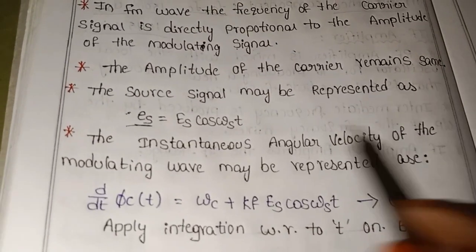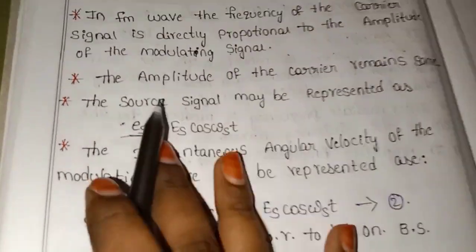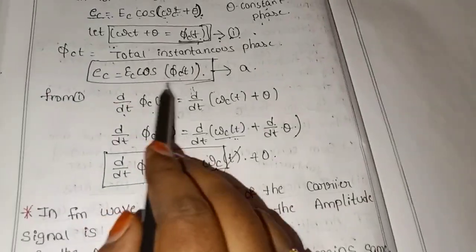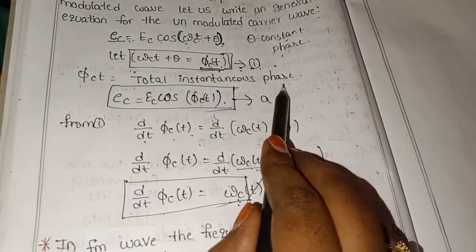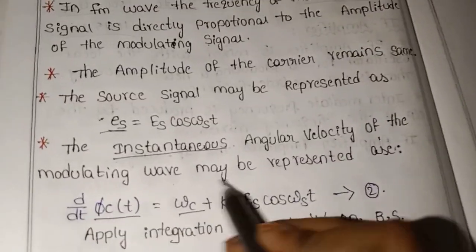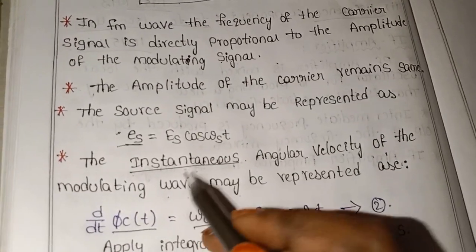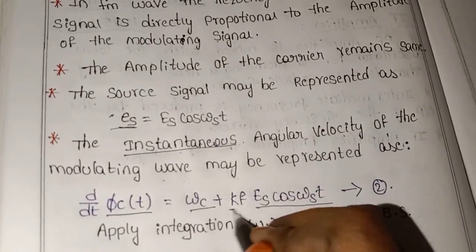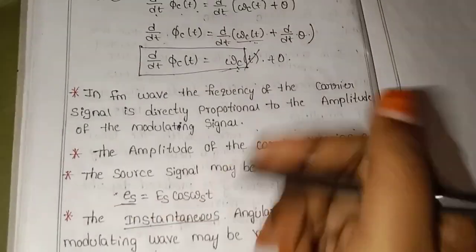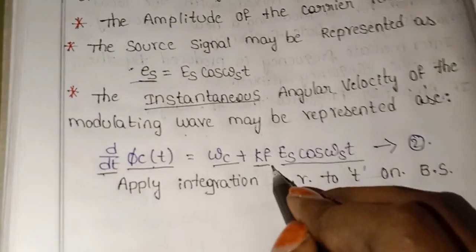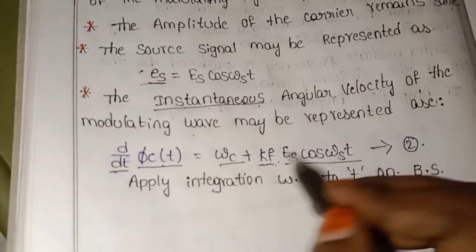The instantaneous phase is φc(t). The instantaneous angular velocity is equal to ωc plus the contribution from the modulating wave. The modulating signal is es = Es cos(ωst). Here we have kf, the frequency constant. So: d/dt of φc(t) = ωc + kf · Es · cos(ωst).